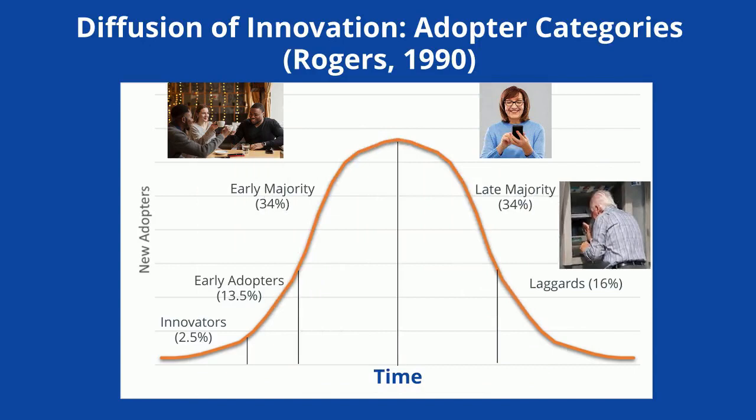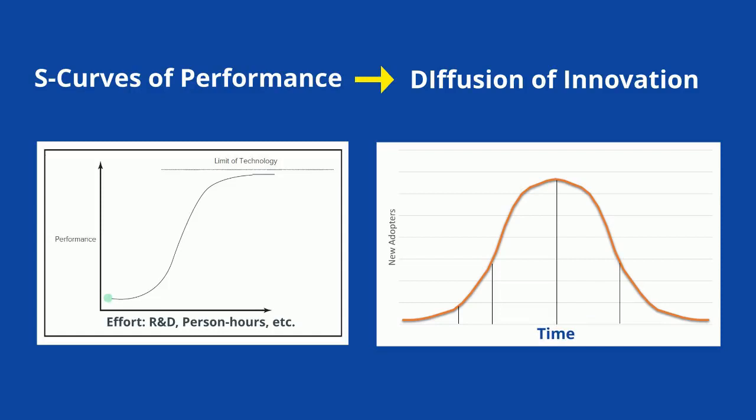Performance curves and diffusion curves thus reflect different processes, but they're related. Only innovators would consider adopting a product that was in its early clunky stages, and it's the rapid rise in performance on the S-curve that enables the innovation to tap the rest of the market.